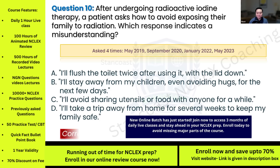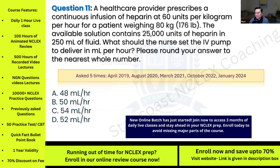Question eleven: A healthcare provider prescribes a continuous infusion of heparin at 60 units per kilogram per hour for a patient weighing 80 kilograms. The available solution contains 25,000 units of heparin in 250 mL of fluid. What should the nurse set the IV pump to deliver in mL per hour? Round to the nearest whole number. This has been asked five times. Options: A) 48 mL/hr; B) 50 mL/hr; C) 54 mL/hr; D) 52 mL/hr.